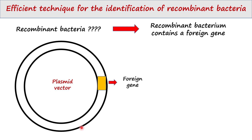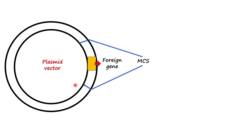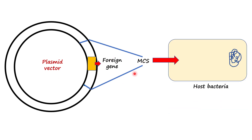The vector might be a plasmid DNA most of the time. All plasmid vectors contain a specific site called MCS, or multiple cloning site. This is the site of a particular plasmid where we can insert the foreign gene, because we cannot insert our gene of interest at a random site of a plasmid — the site is very specific. It is this MCS, or multiple cloning site.